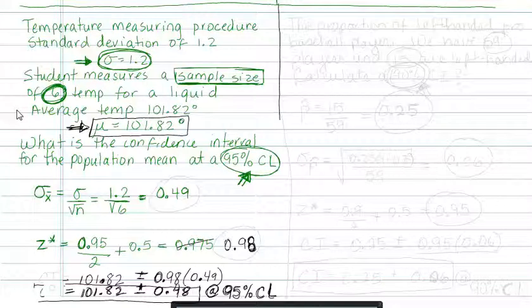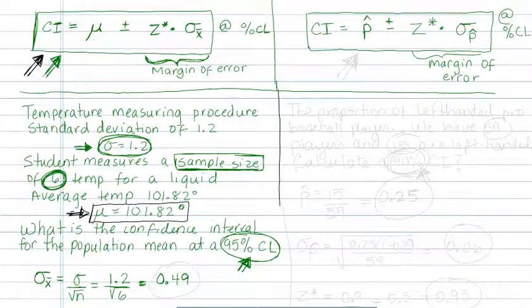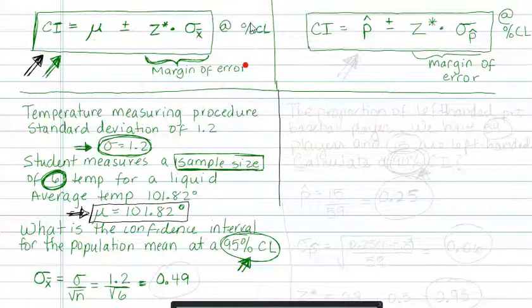Now you're ready to calculate the confidence interval. Look at the confidence interval for a mean sampling distribution. It's going to be mu plus or minus z-star times the standard error, which is sigma sub x-bar. Mu is 101.82 plus or minus z-star, we just calculated z-star to be 0.98.